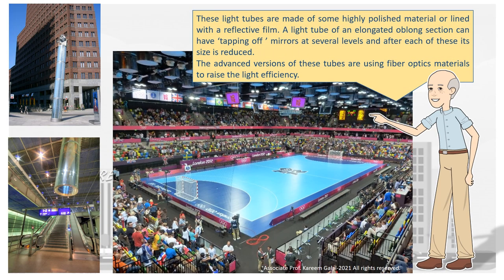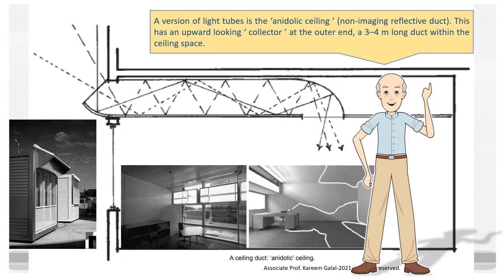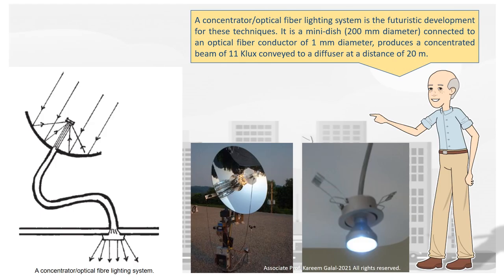A system of mirrors and light tubes would allow the use of such systems over several storeys. These light tubes are made of highly polished material or lined with a reflective film. A light tube of an elongated oblong section can have tapping-off mirrors at several levels, and after each of these its size is reduced. Advanced versions use fiber optics materials to raise the light efficiency. A version of light tubes is the anidolic ceiling — a non-imaging reflective duct — with an upward-looking collector at the outer end and a 3–4 m long duct within the ceiling space. A concentrator/optical fiber lighting system is the futuristic development: a mini-dish of 200 mm diameter connected to an optical fiber conductor of 1 mm diameter produces a concentrated beam of 11 KLX conveyed to a diffuser at a distance of 20 m.